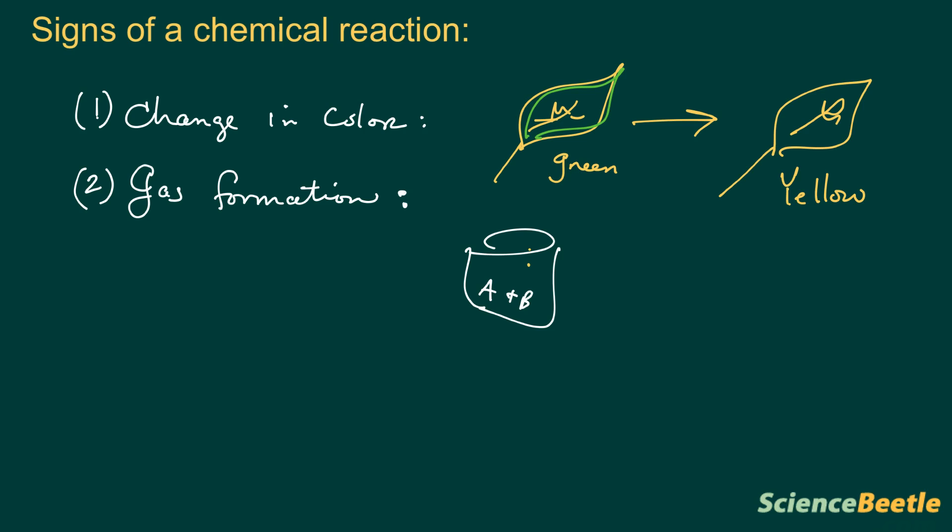The third way that you tell that the chemical reaction actually took place is very similar to the second one where gas is formed, but here what we're looking for is the production of odor. Like in the previous example, you will have the container and inside this container you'll have some kind of substance A reacting with some substance B, but what we will see is that it will have these gas particles coming out that eventually we are going to smell.